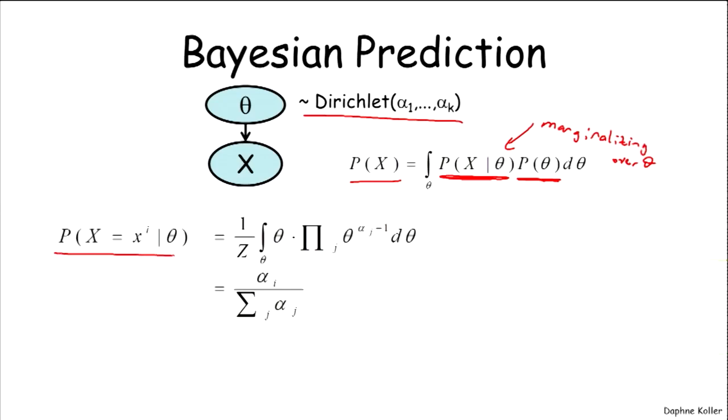In this case, we have the probability that x takes the particular value xi is 1 over z times the integral over all of the parameters theta of theta i, which is the probability given the parameterization theta that x takes the value little xi, times this thing over here, which is the prior.